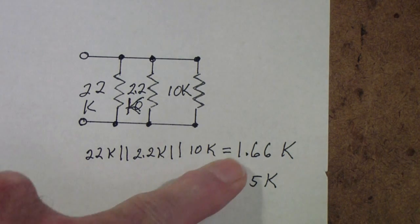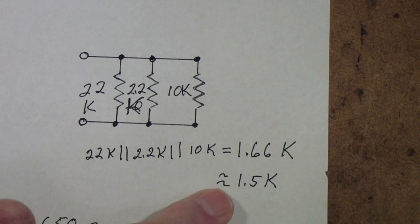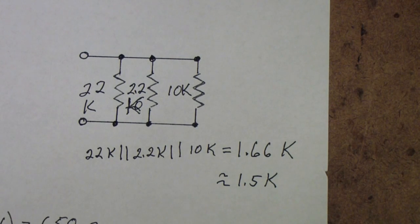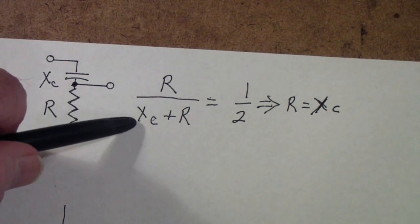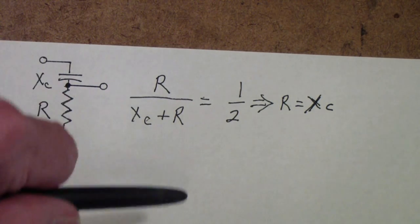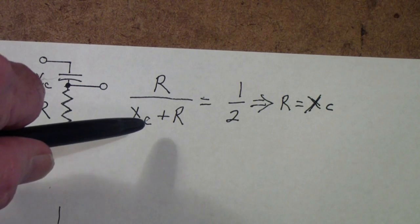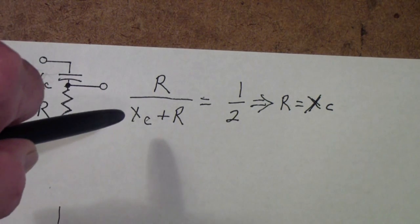That turns out, if you calculate that, to be about 1.66k. We're going to just call it 1.5k. We now want to find the right size capacitor so that it is equal to R. We've determined R is 1.5k. So we want to know what is XC such that it has a capacity reactance of 1.5k.